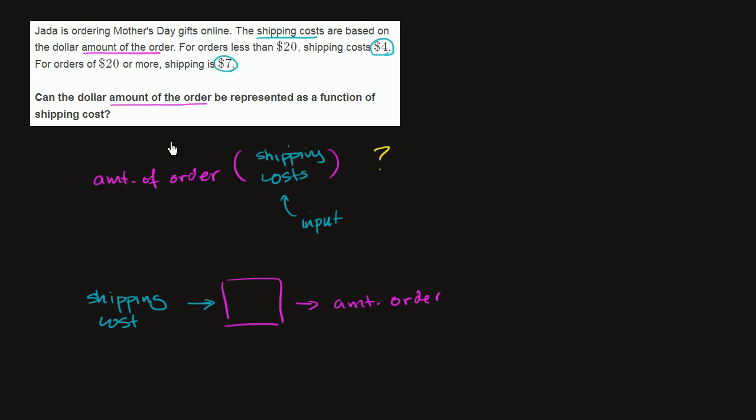So let's think about what happens when we input $4 as a shipping cost. If we input $4 into our relationship, into our little potential function box, what is the output? What is going to be the amount of the order? Well, if the shipping cost is $4, the amount of the order could be anything less than $20.